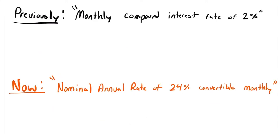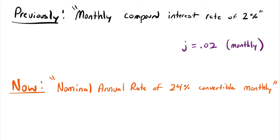Previously in a problem, we might have been told that our interest rate was a monthly compound interest rate of 2%. In this case, our monthly rate j, which is a non-yearly rate, would be equal to 0.02, and our number of periods m is equal to 12.